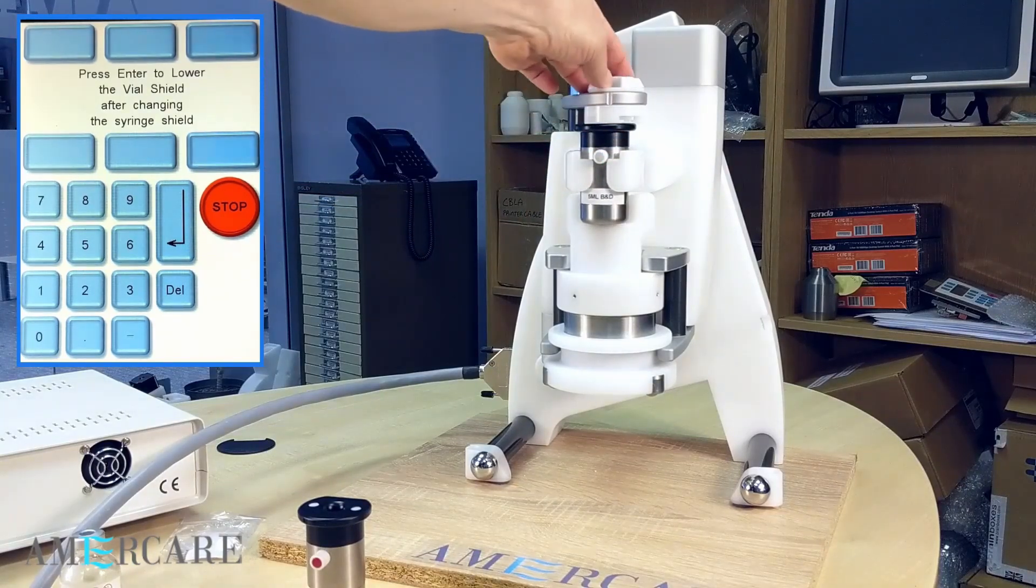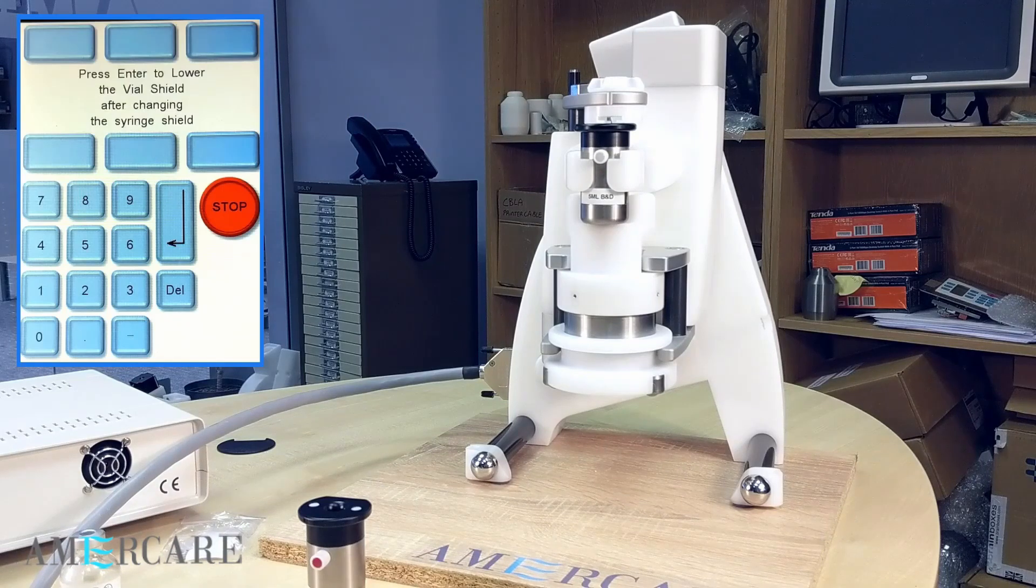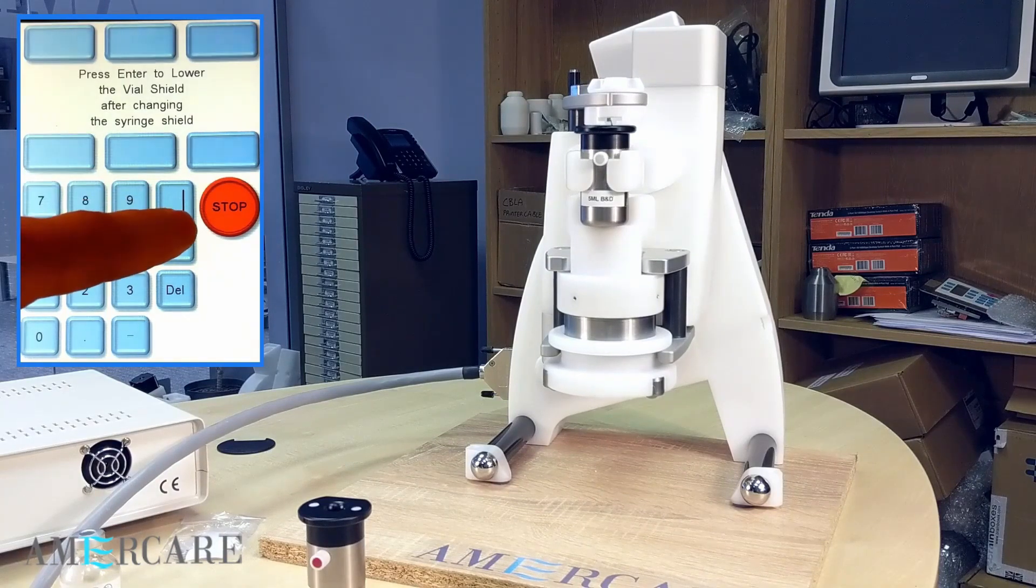Ensure that the dial on the top of the unit matches the colour of the cap of the shield. Press enter to lower the carriage.